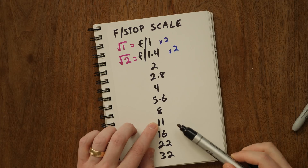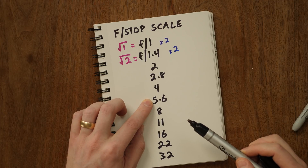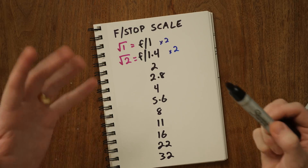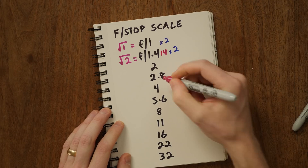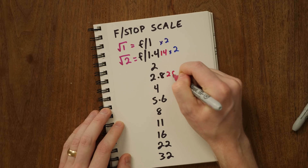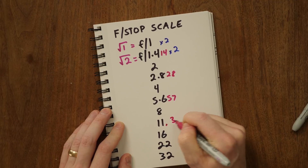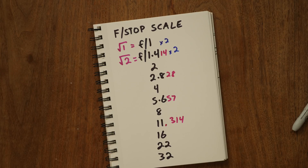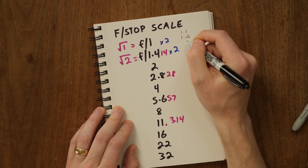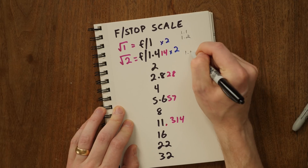Now some people ask: is f11 — that's not exactly 5.6 times 2, wouldn't that be 11.2? Well, if you really want to get technical, the square root of 2 is actually 1.414, so this is 2.828, this is 5.657, 11.314. But you don't need to know all that. Your camera will also do third stops — when you're dialing in the aperture, before it gets to 1.4 it might say 1.1, then 1.2, then 1.4, then 1.6, 1.8, then 2. I don't think you need to memorize all the third stops, because even just knowing the primary stops along the scale is super useful.